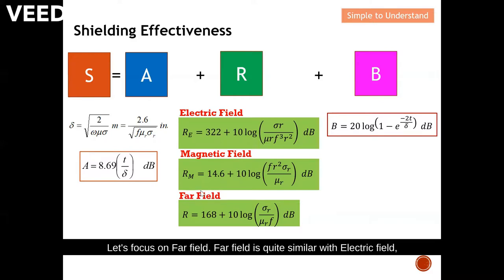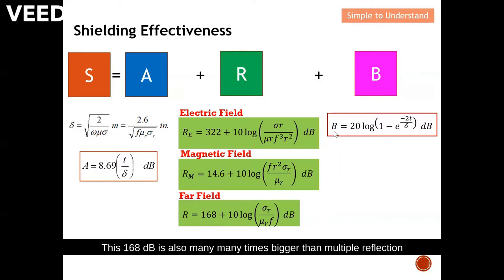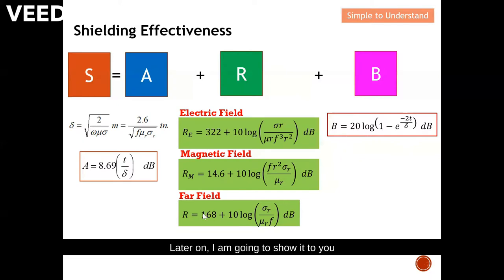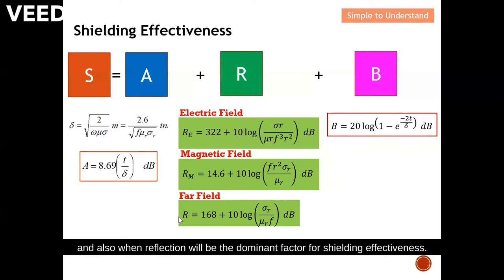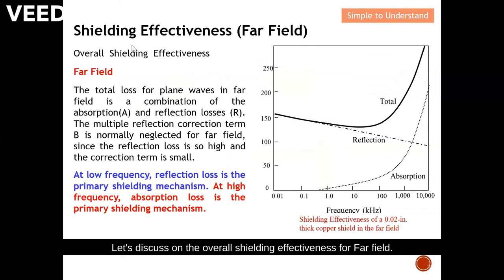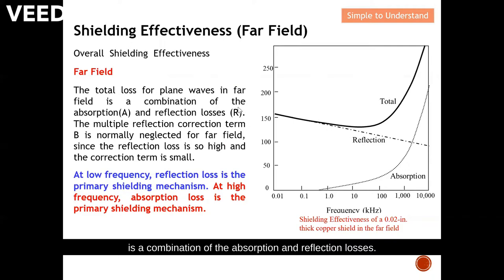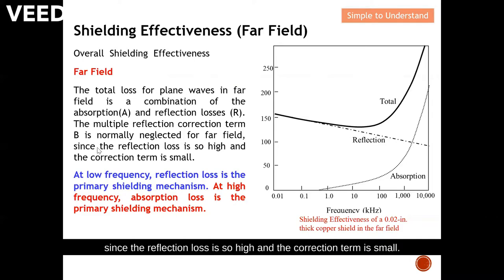Let's focus on far field. Far field is quite similar to electric field. The protection is 168 dB, which is quite significant. This 168 dB is also many times bigger than multiple reflection. Hence, for far field, we actually omit away the multiple reflection formula. Later on, I'm going to show you when absorption will be the dominant factor for shielding effectiveness and also when reflection will be the dominant factor. Let's discuss the overall shielding effectiveness for far field. The total loss for plane wave in far field is a combination of the absorption and reflection loss. The multiple reflection correction term B is normally neglected for far field since the reflection loss is so high and the correction term is small.